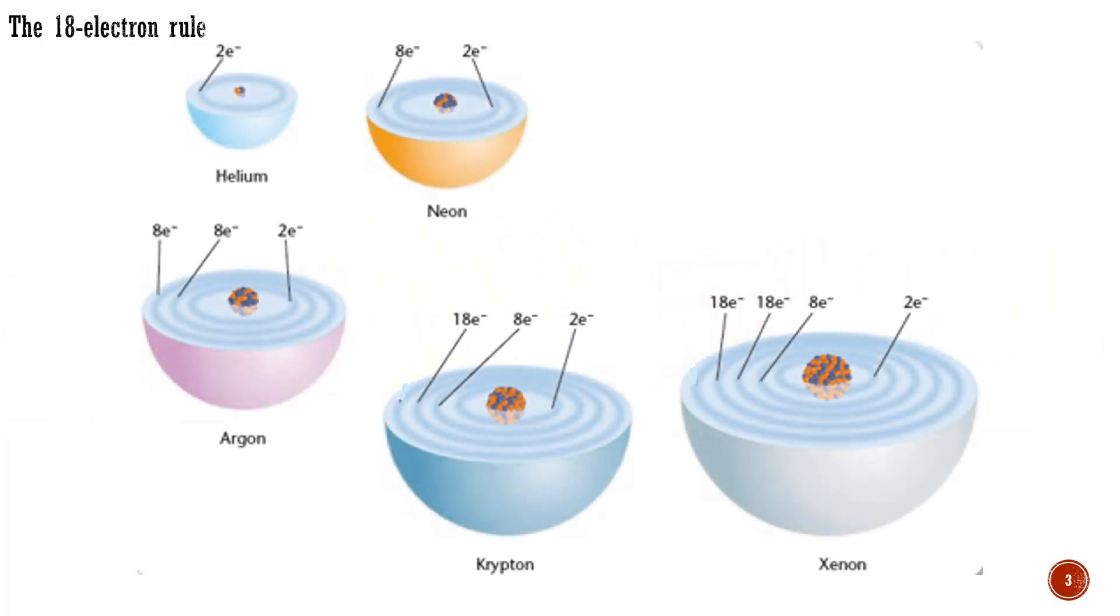Just as organic compounds follow the octet or 8-valence electron rule, typical organometallic compounds tend to follow the 18-electron rule. This is also known as the noble gas or effective atomic number rule because the metals in an 18-electron complex achieve the noble gas configuration. For example, in the Werner complexes, the cobalt has the same effective atomic number as krypton, meaning it has the same number of electrons as the rare gas.